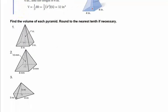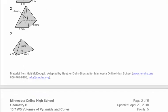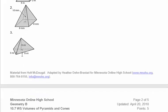For problems one, two, and three, you just find the area of the base, multiply by the height, and then take one-third. The only one that might give you a little trouble is number three, because the area of the base is a triangle.